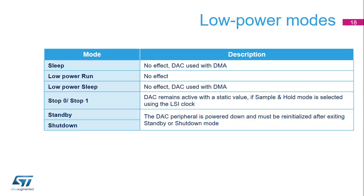The digital to analog converter is active in the following low power modes: run and sleep. In stop 0 and stop 1 modes, it remains active when sample and hold mode is selected. In standby and shutdown modes, the DAC is powered down and it must be re-initialized afterwards.